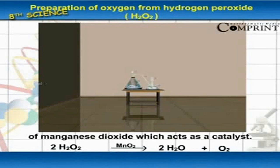The chemical equation: 2H2O2 gives 2H2O plus O2. Hydrogen peroxide gives water plus oxygen.